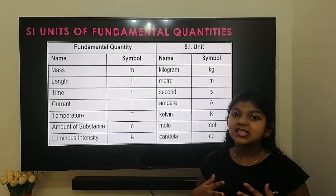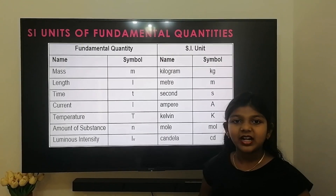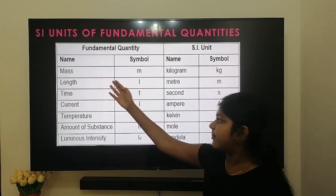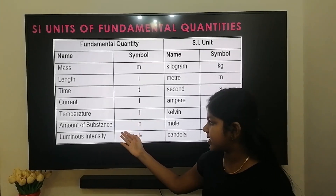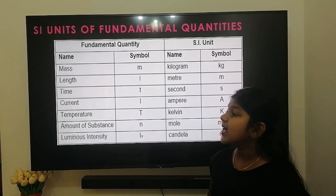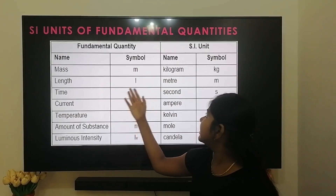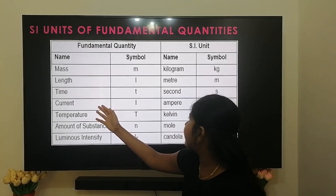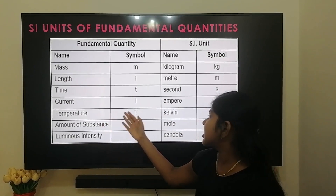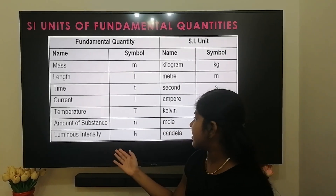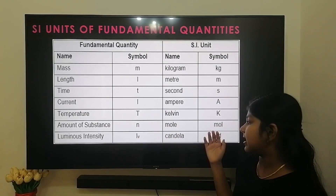Now we are going to see the seven fundamental quantities and their SI units. The seven fundamental quantities are: mass, length, time, current, temperature, amount of substance, and luminous intensity. The SI unit of mass is kilogram. The SI unit of length is meter. The SI unit of time is second. Current is expressed in ampere. Temperature is expressed in Kelvin. Amount of substance is expressed in mole. And luminous intensity is expressed in candela.